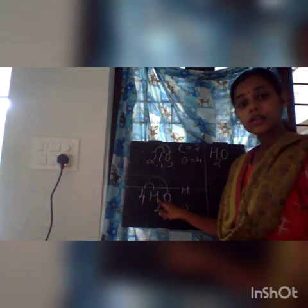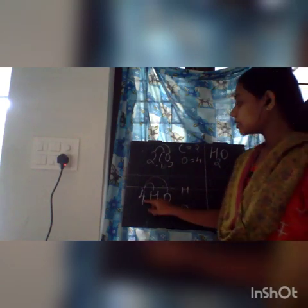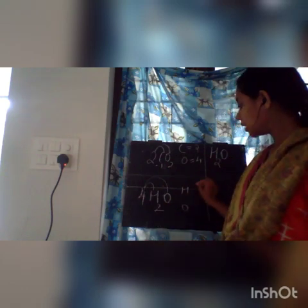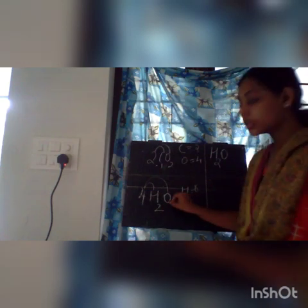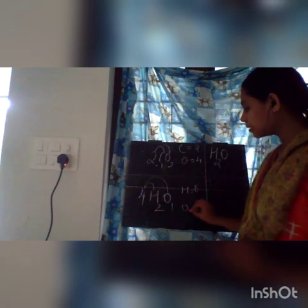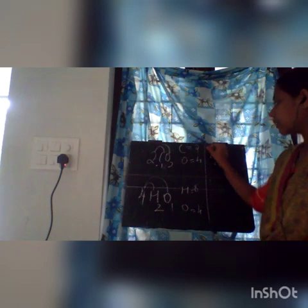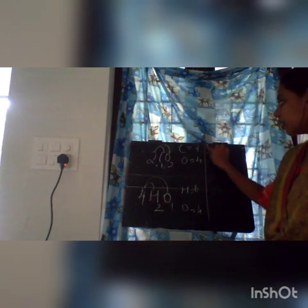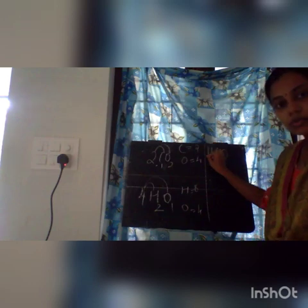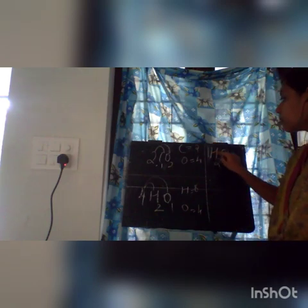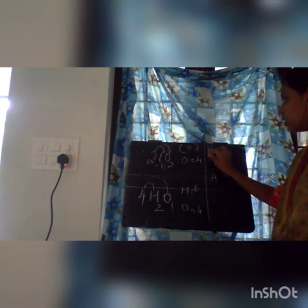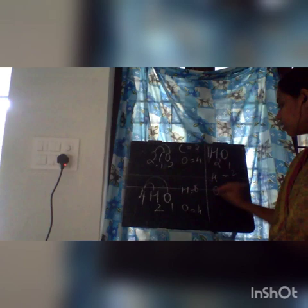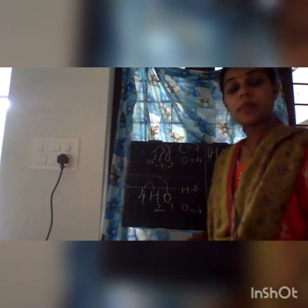For water (H2O) with coefficient 4: hydrogen and oxygen are the elements. The 4 is common to both. Number of hydrogen atoms: 4 into 2 equals 8. For oxygen: 4 into 1 equals 4. For plain H2O with no coefficient, we assume it is 1. So hydrogen: 1 into 2 equals 2, and oxygen: 1 into 1 equals 1.